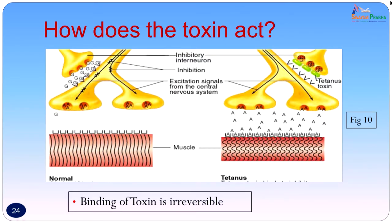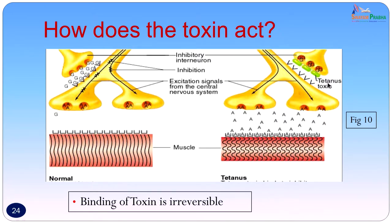The mechanism of action is well explained diagrammatically. In a normal muscle, excitatory signals from the CNS cause muscle contraction, while inhibitory interneurons release glycine to prevent further acetylcholine release, allowing muscle relaxation. In tetanus, the tetanus toxin binds on the motor nerve end plate and prevents acetylcholine release, removing the inhibitory interneuron effect. This binding is irreversible and the muscle stays in a state of contraction.